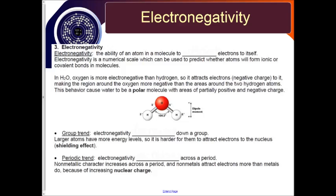Electronegativity is the ability of an atom in a molecule to attract electrons to itself. Electronegativity is a numerical scale which can be used to predict whether atoms will form ionic or covalent bonds in molecules.